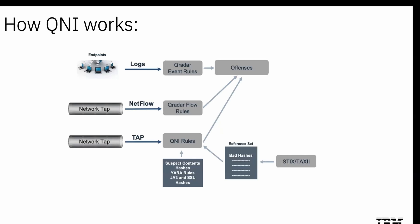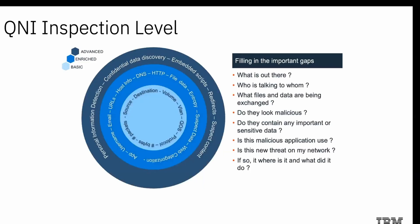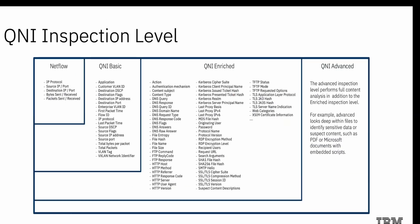The IBM QRadar Network Insights content extension provides multiple rules and report content to detect suspicious behavior via flow analysis. You can configure the inspection level — the level of detail retrieved from your traffic. The basic level includes data such as source and destination IP addresses, network protocols, and quality of service. The enriched flow inspection level includes all basic flow inspections and adds data such as username, host information, and file hashes. The advanced flow inspection level includes basic and enriched flow inspections and contains much more granular data such as document contents. You can refer to the detailed table showing what can be captured at different QNI inspection levels.